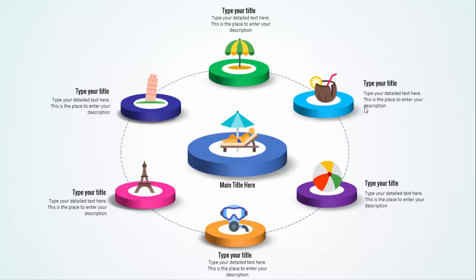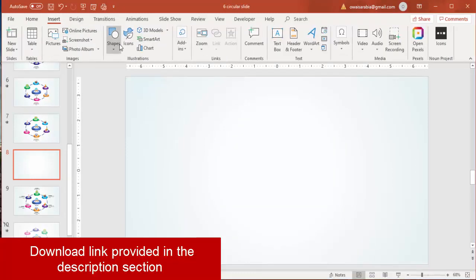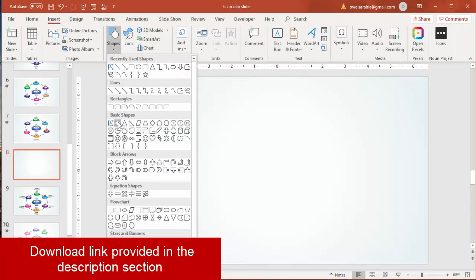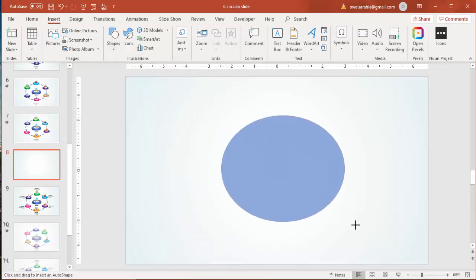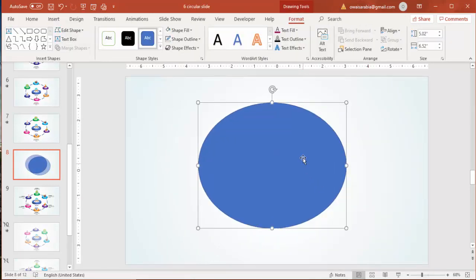Let's see how to create this slide in PowerPoint. Add a new slide and change the background to a gradient. Then go to Insert > Shapes, select an oval shape, and draw it to a suitable size — it doesn't need to be a perfect circle, just an oval shape.